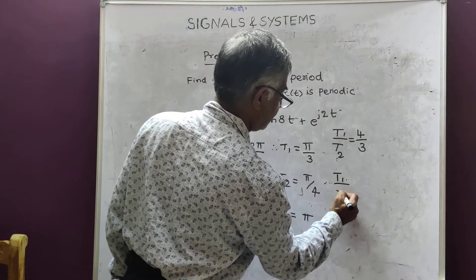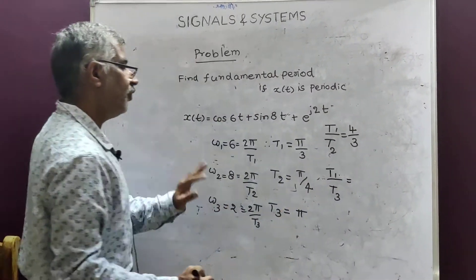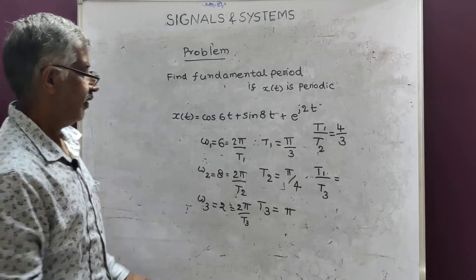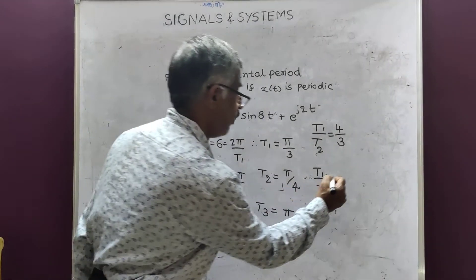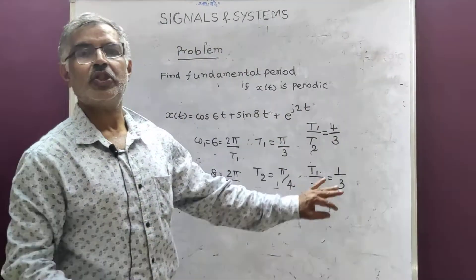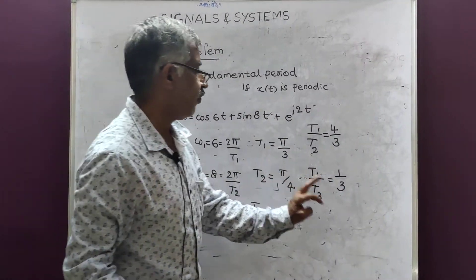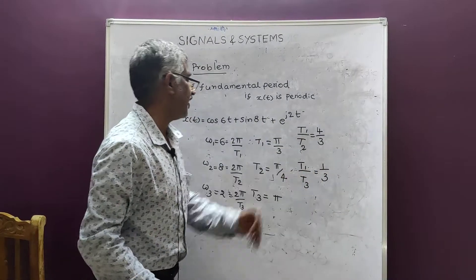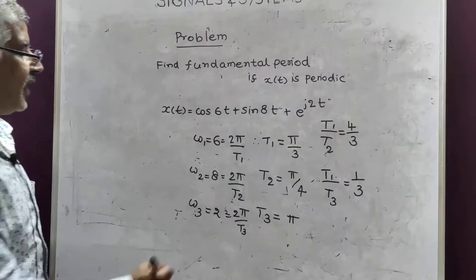Second case. t1 by t3. Even if you take t1 by t3, we get 1 by 3. So, once again, this is also ratio of numbers, integers. So, condition is satisfied.